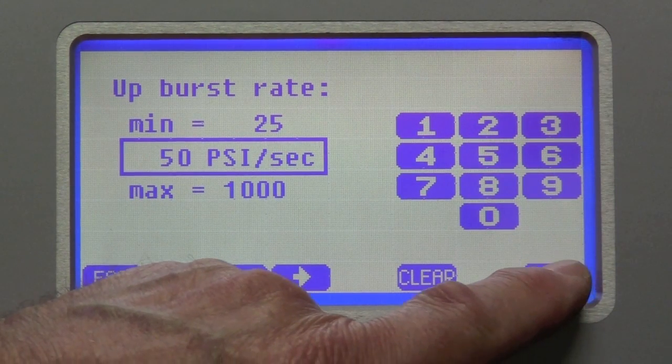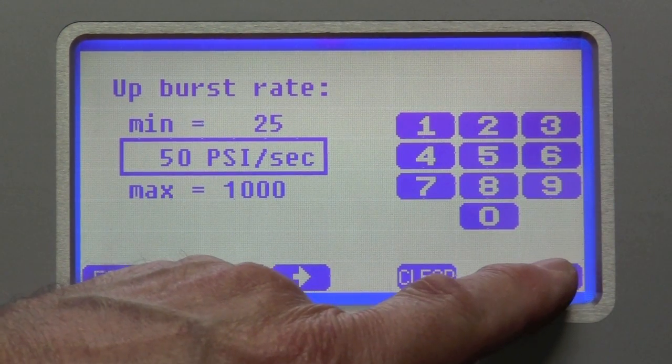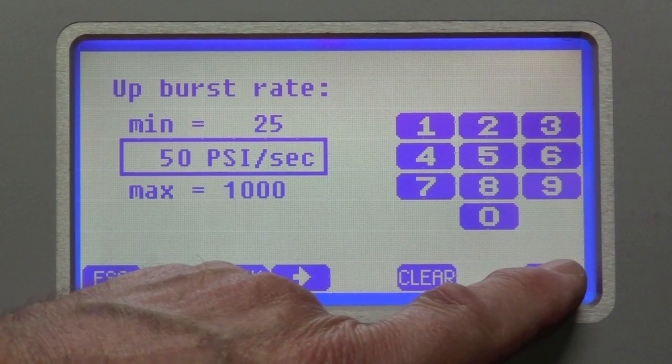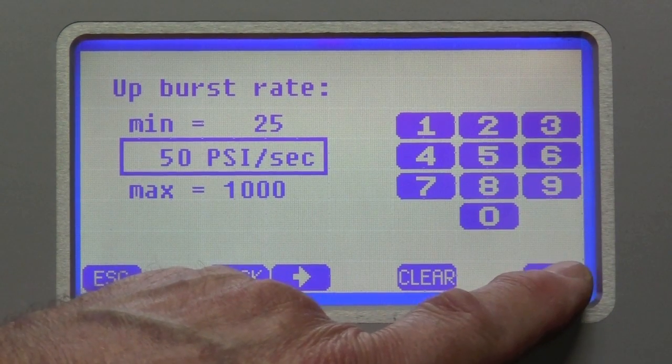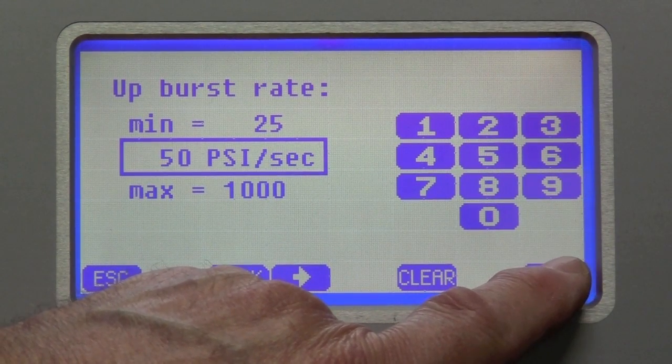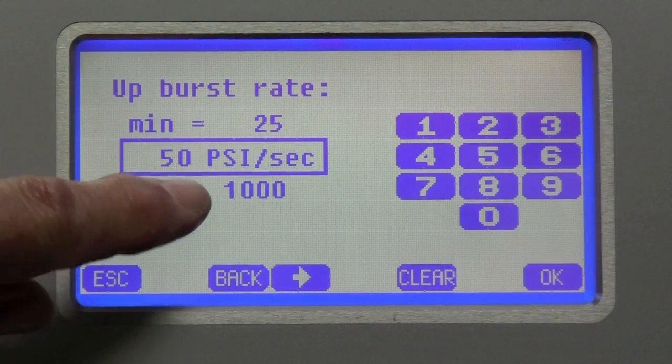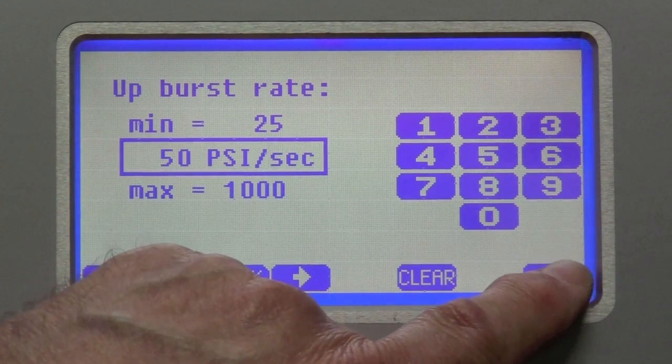The upburst rate is the sensitivity of the burst detection profile. And I'm going to leave it defaulted at 50 psi per second. And you can see the range, by the way, the minimum and the maximum on all of these parameters.